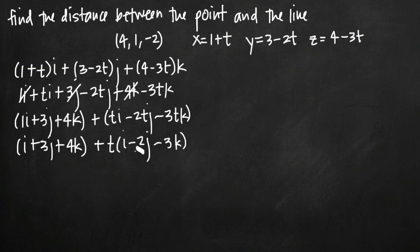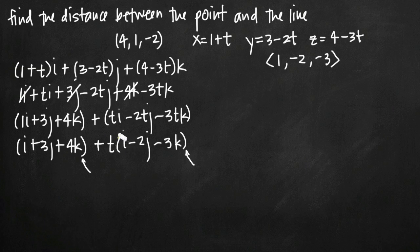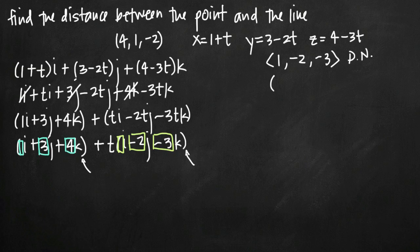The cool thing about putting the equation of the line in this form is that the coefficients in the second group give us our direction numbers, and the coefficients in the first group give us a point through which the line passes. So the direction numbers for the line are 1, negative 2, negative 3. And we know our line passes through the point (1, 3, 4).